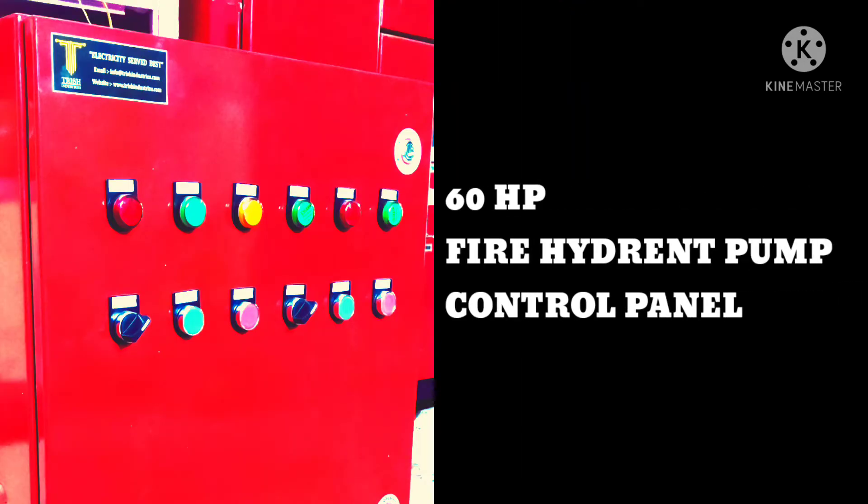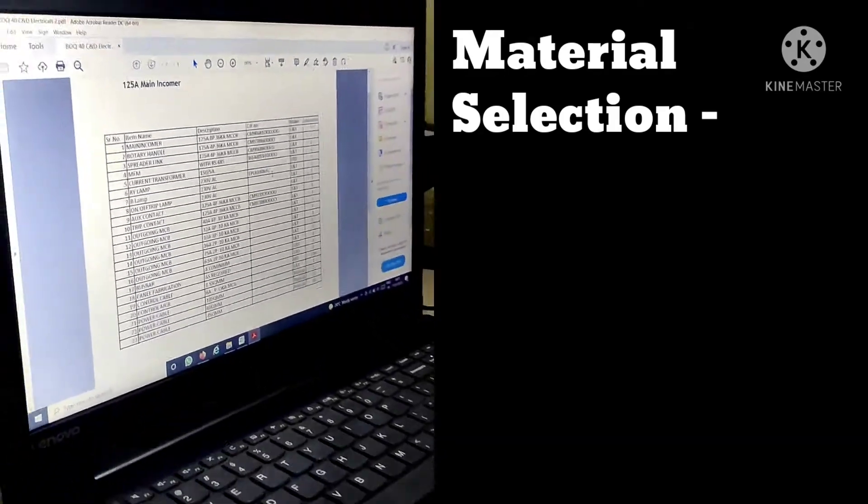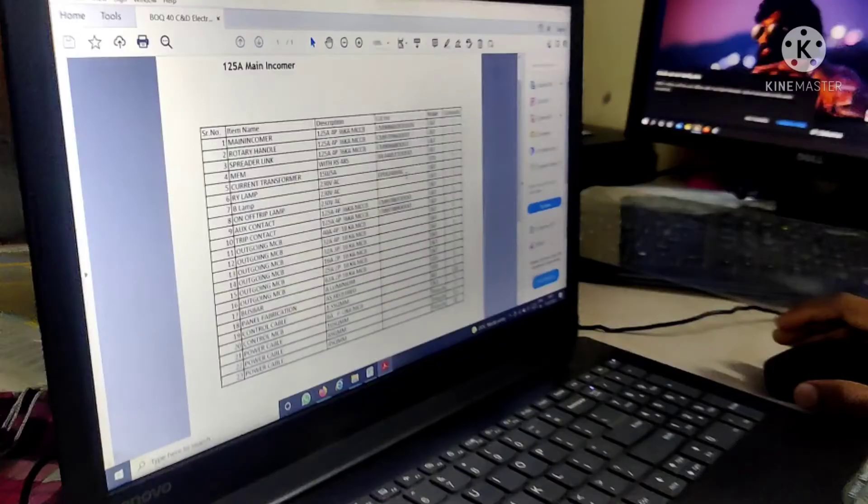For example, we have taken 60 HP fire hydrant foam control panel. As per the system requirements and logic you have developed, you first have to do the material selection.